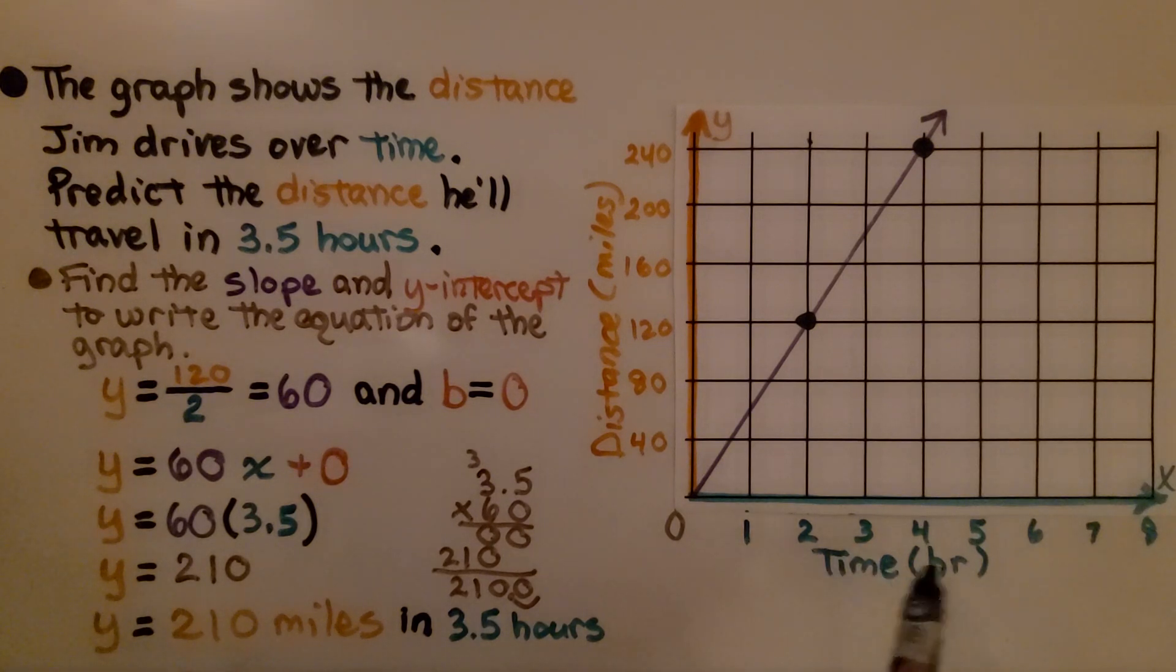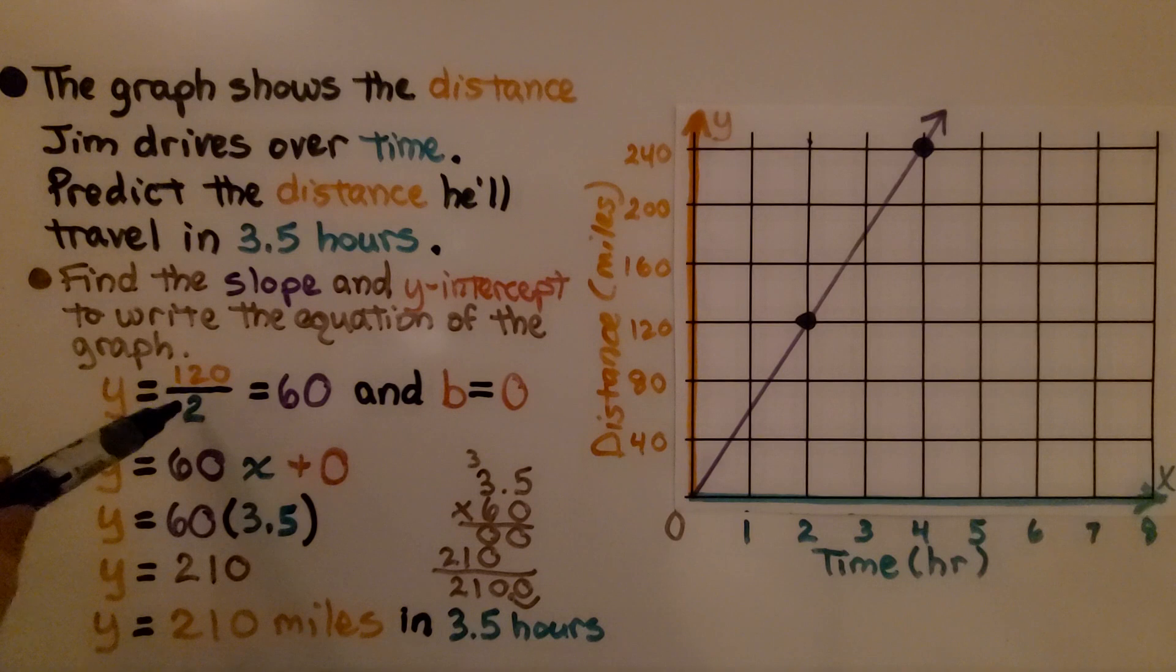We can see the hours are in whole numbers. They want 3.5 hours in between this 3 and 4. So we find the slope and y-intercept to write the equation of the graph.